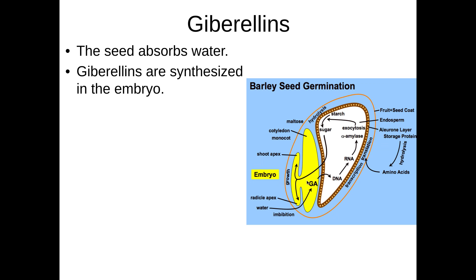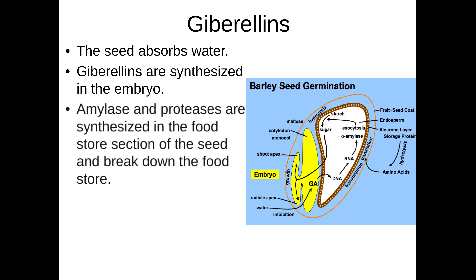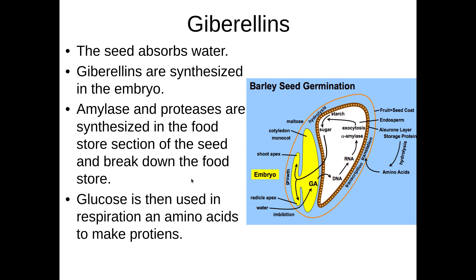The embryo is just a part of the seed. The next thing that happens is that amylase and proteases are going to be made in the food store, because gibberellin acts as a transcription factor turning on the section of DNA that codes for these two enzymes — amylase and protease. Amylase will break down starch into glucose for aerobic respiration, and proteases will break down protein stores into amino acids which are used for growth of the shoots and the roots.